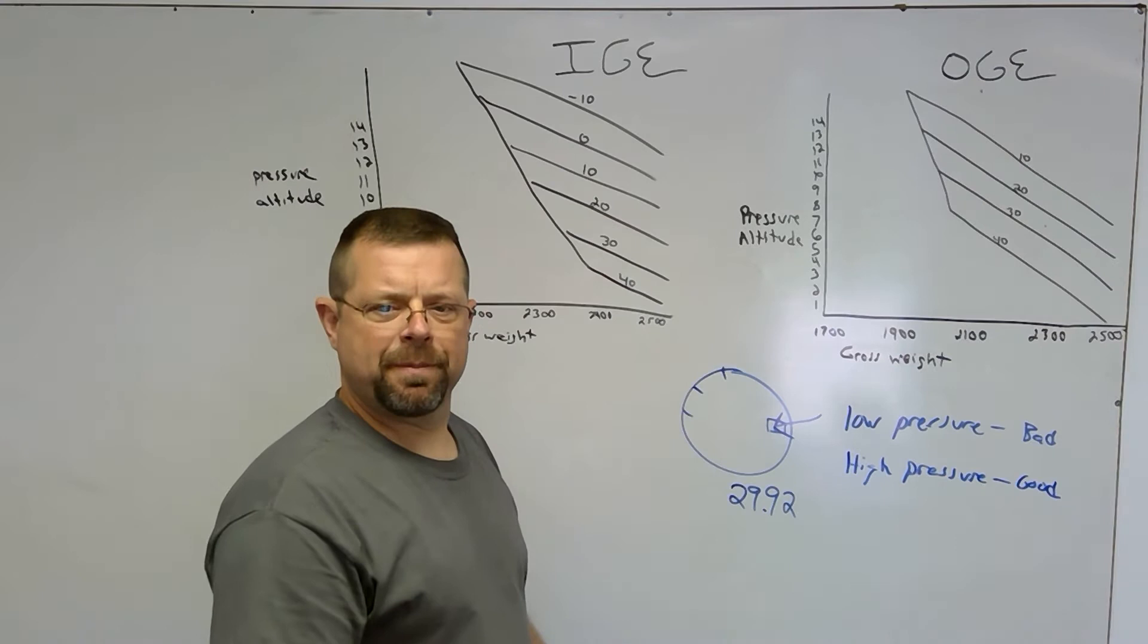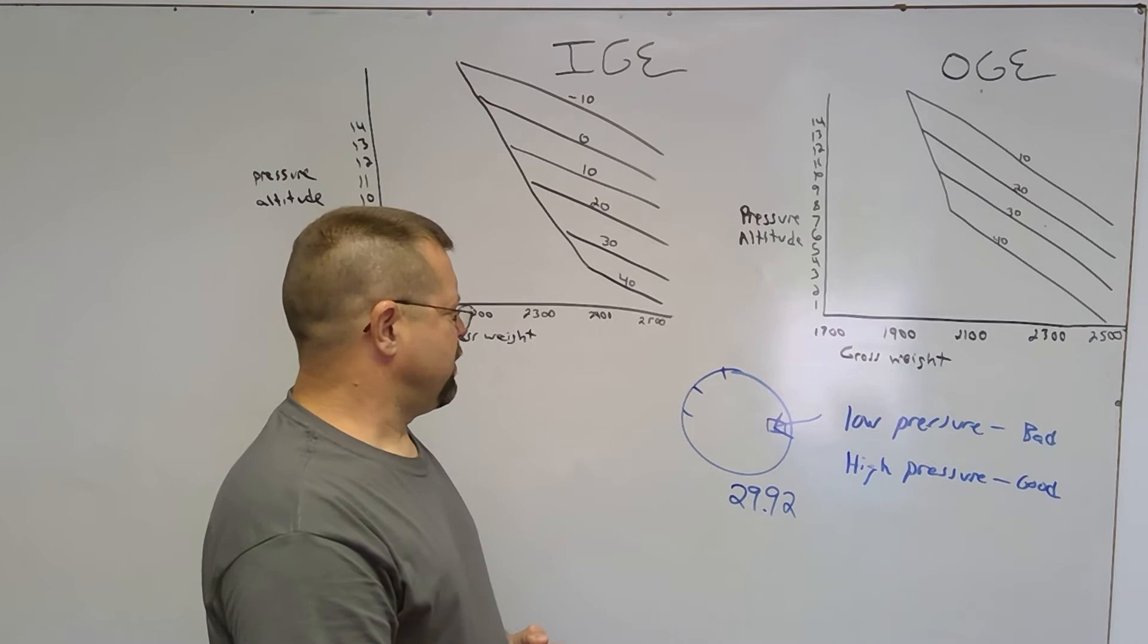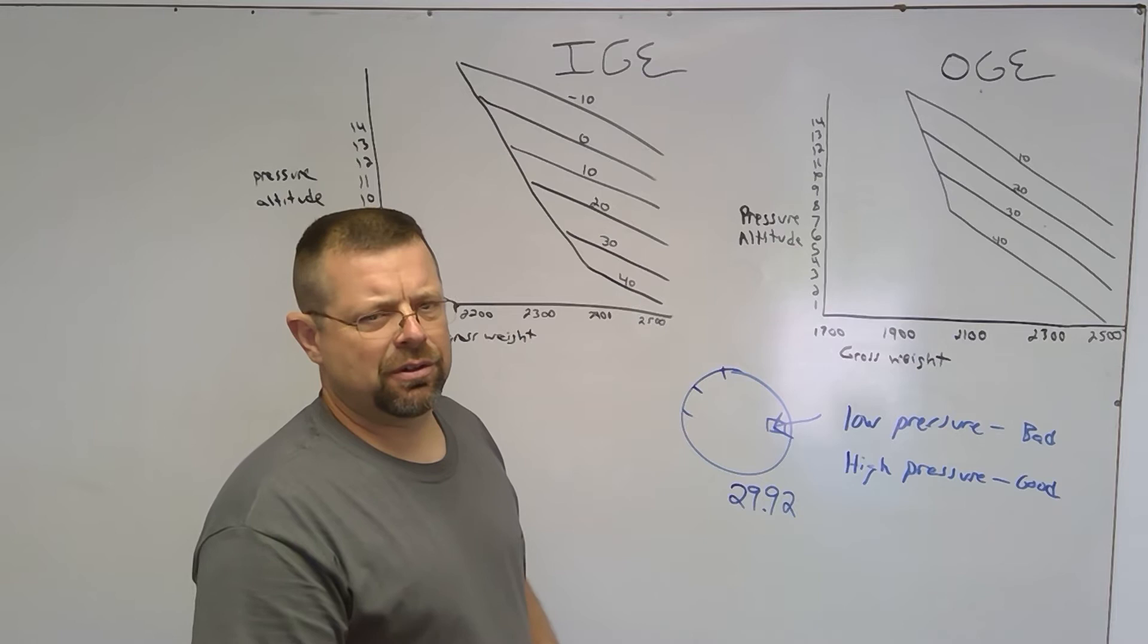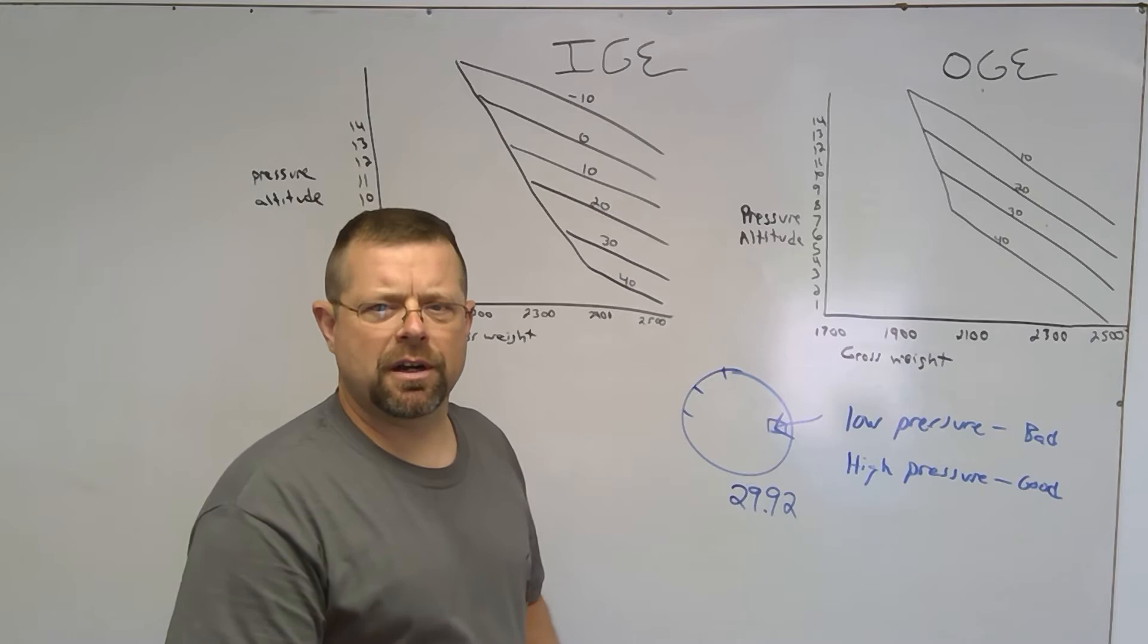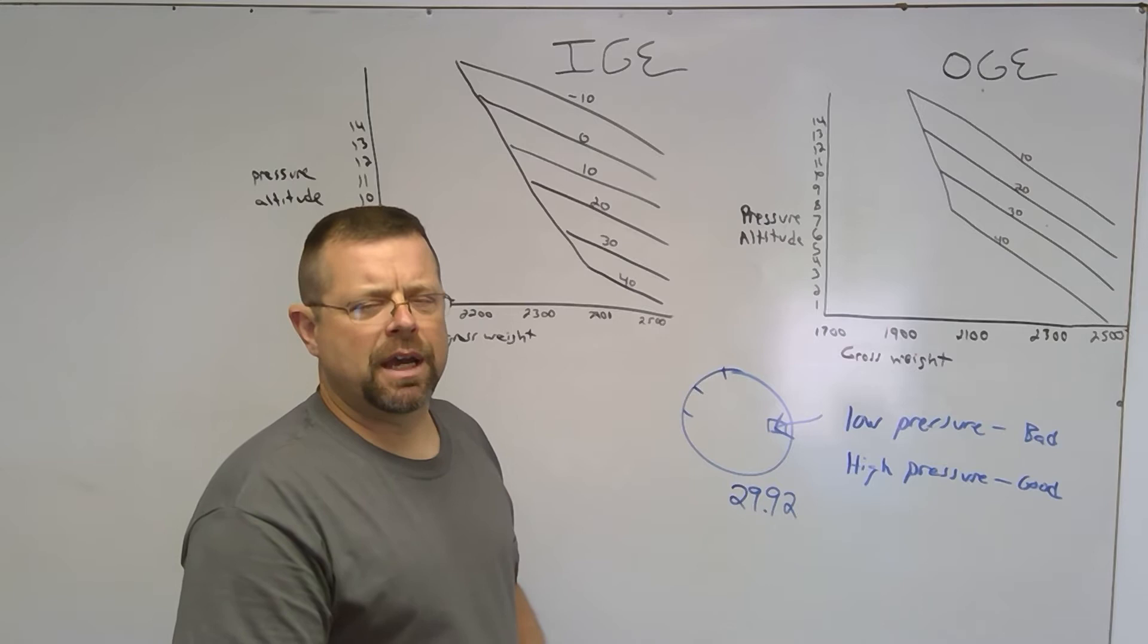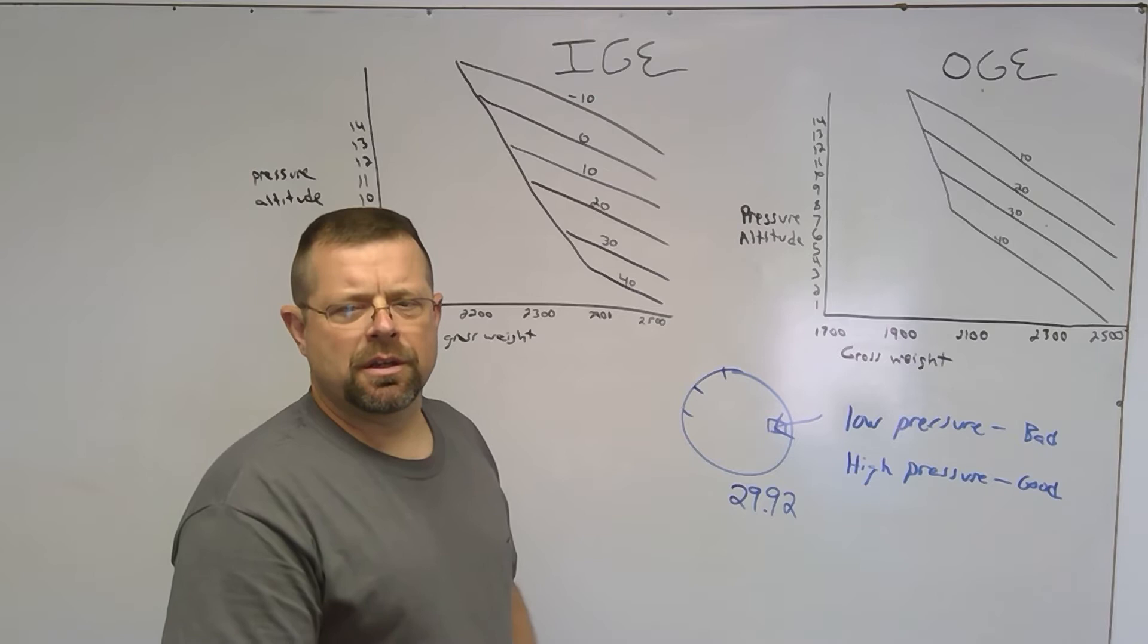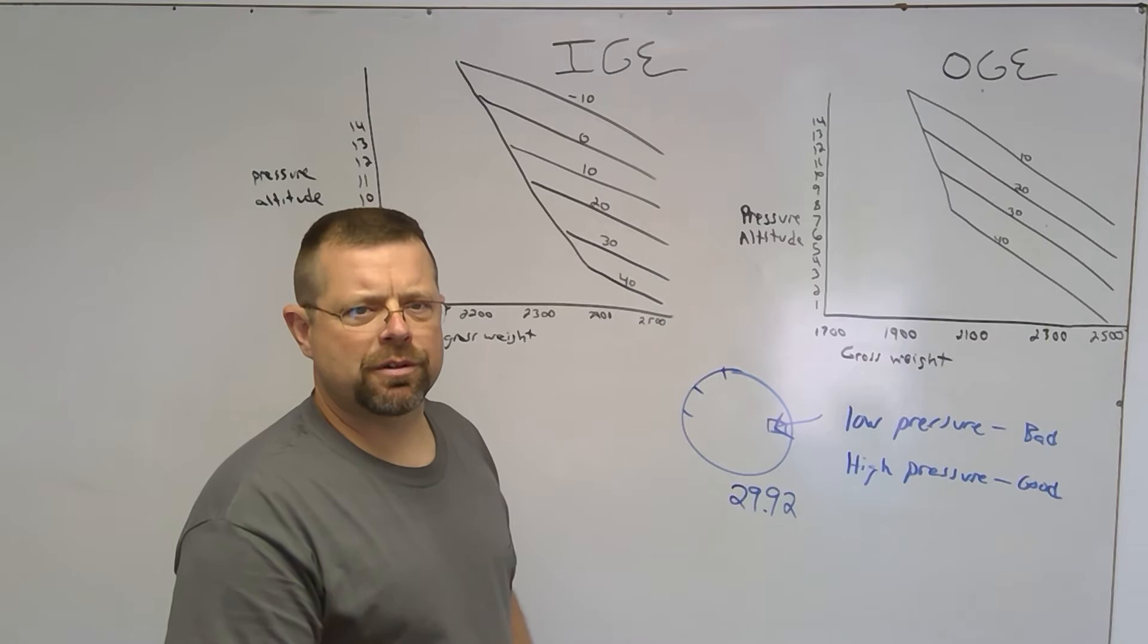Now pressure altitude is affected by temperature, and that then gives us density altitude. So the definition of density altitude is pressure altitude corrected for non-standard temperature. Standard temperature is 59 degrees Fahrenheit or 15 degrees Celsius. You will also find in some pilot operating handbooks a chart to figure density altitude from pressure altitude given the temperature.